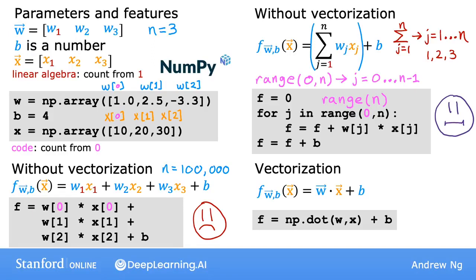And then finally you can add b to it at the end. This numpy.dot function is a vectorized implementation of the dot product operation between two vectors, and especially when n is large, this will run much faster than the two previous code examples.